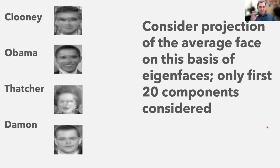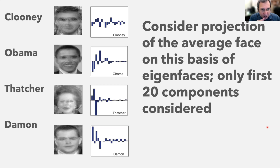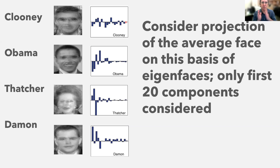We can consider not just five but 20 components — since we started with 20 faces. Instead of thinking of a point in high-dimensional space, you can look at the value in each eigenface direction. For George Clooney, he has a slightly negative first eigenface component, slightly negative second, positive third, positive fourth, more negative fifth, and so on. The significance decreases as we go. The first few eigenvectors are ordered to be the most important for distinguishing features.